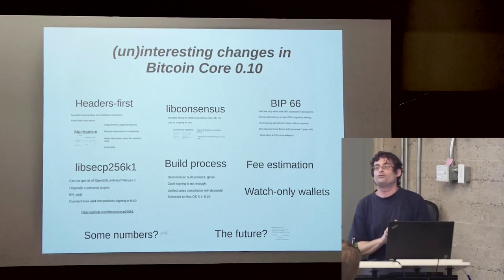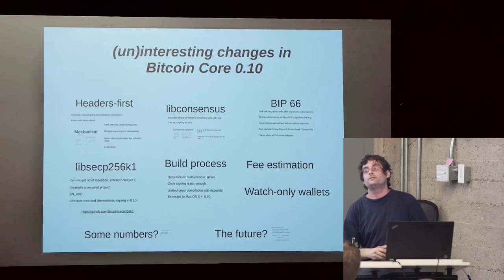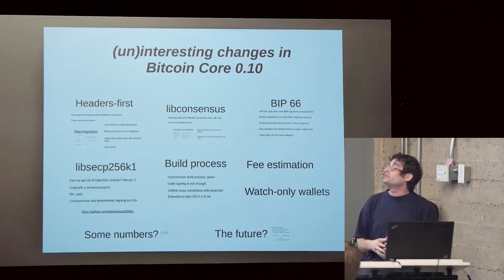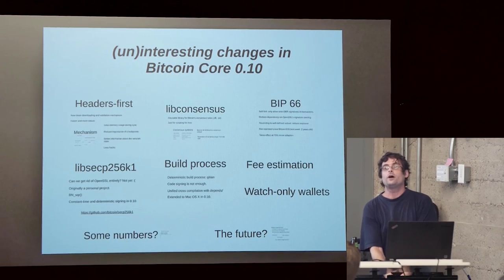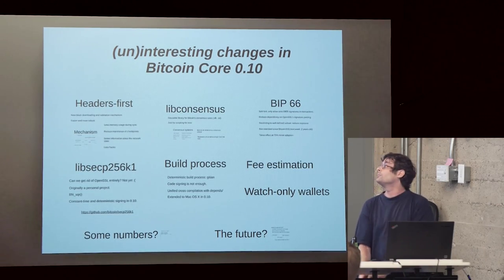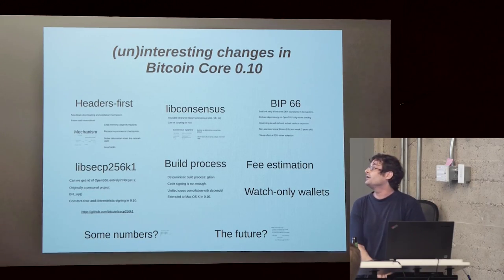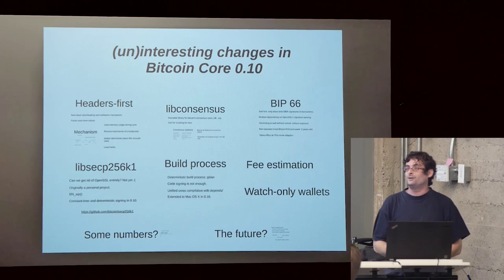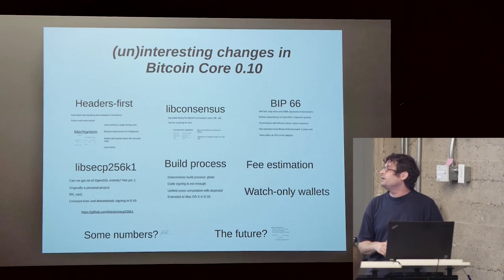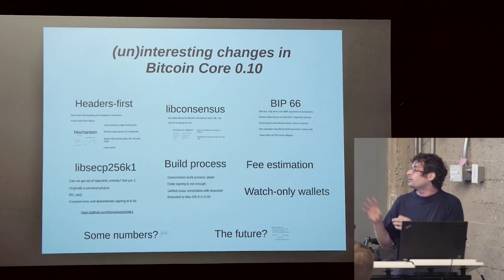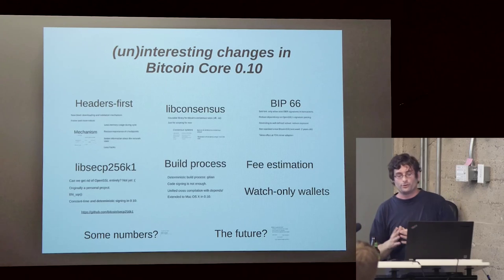Here's a short overview of things I'm going to talk about: the headers-first synchronization mechanism in 0.10; the new libconsensus library; the BIP66 soft fork, which will require strict DER signatures; a new library for elliptic curves called libsecp256k1; some things about the build process; fee estimation and watch-only wallets; and then I'll talk some numbers and give a prospect for the future.